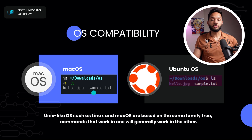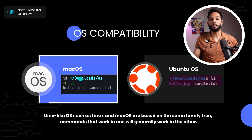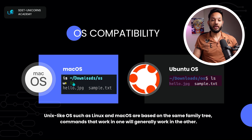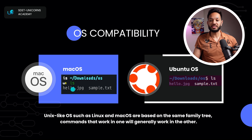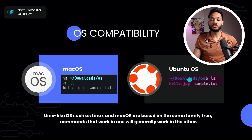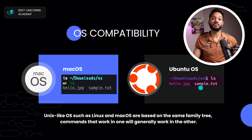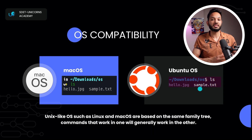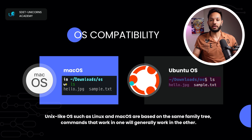For example, running the 'ls' command on Mac OS lists all your files and directories. When I run the same command in Ubuntu — which is part of Linux — it also prints out the same details, including 'hello.jpeg' and 'sample.txt'. So the same command works for both Ubuntu and Mac OS, because they're part of the same family tree and most commands work across both.